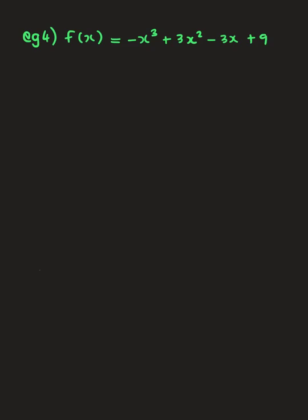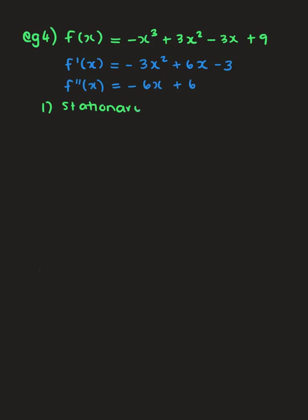Example four. I find the first derivative: -3x² + 6x - 3. The second derivative: -6x + 6. 'a' is negative so the function starts by decreasing. For stationary points, we let the first derivative equal zero. Dividing through by -3: x² - 2x + 1 = 0, which is (x - 1)² = 0. We have only one stationary point: x = 1.